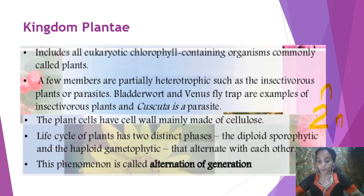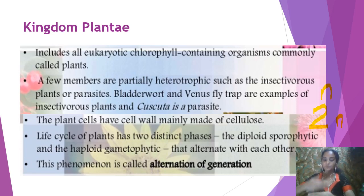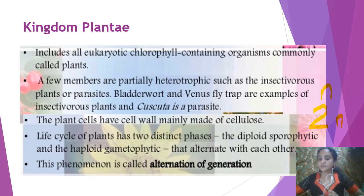So n represents the haploid phase and 2n represents the diploid phase. In the life cycle of plants, the first sporophyte will come, then it will alternate with the gametophyte, then sporophyte, then gametophyte — it undergoes alternation of generation. The gametophytic generation represents the haploid phase with one set of chromosomes. The sporophytic state is diploid, containing double the chromosome set. For example, if n equals 6, then 2n equals 12.